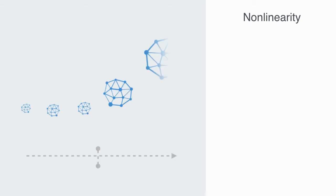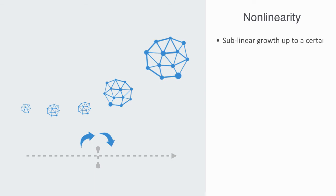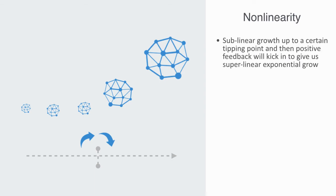The growth of a network may be non-linear, meaning there will likely be sub-linear growth up to a certain tipping point, and then positive feedback will kick in to give us super-linear exponential growth. In this way, something like the internet can lay relatively dormant for a long time and then take off rapidly.